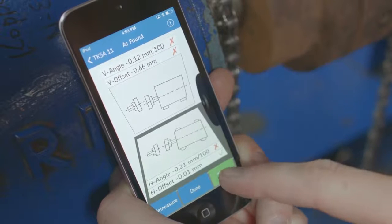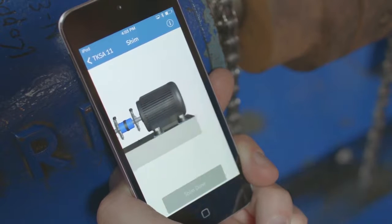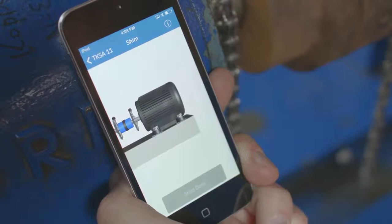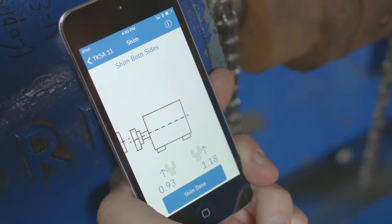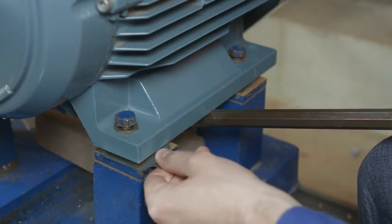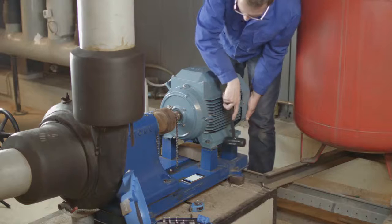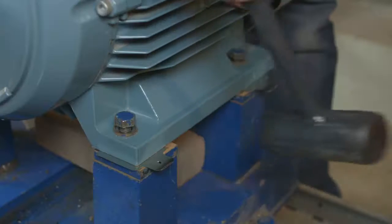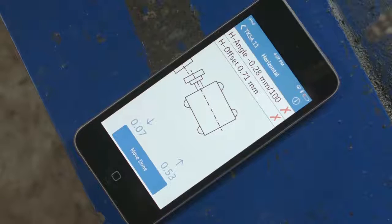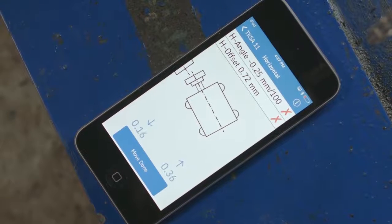After determining the current shaft misalignment, the app guides you through the alignment process. Firstly, by showing what shims are needed for the vertical alignment and then which movements need to be performed for horizontal alignment. The live view helps you quickly achieve accurate positioning.